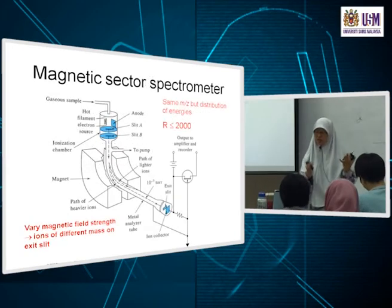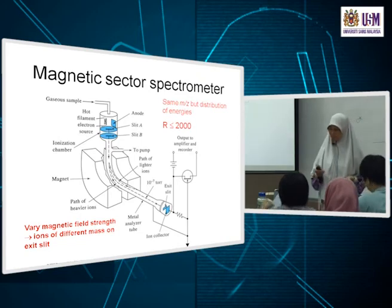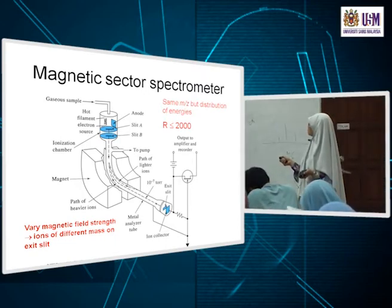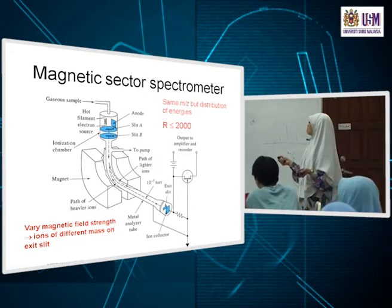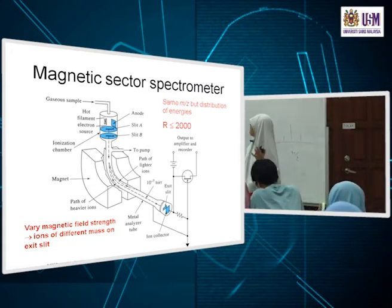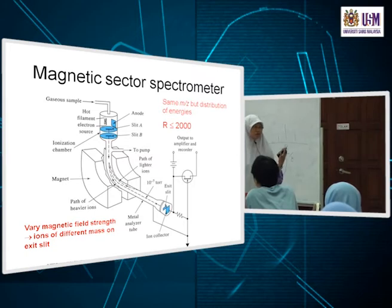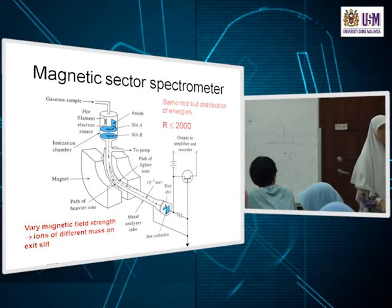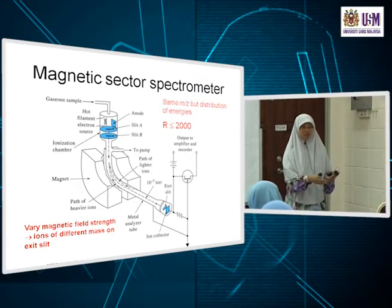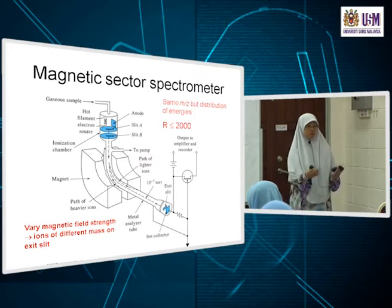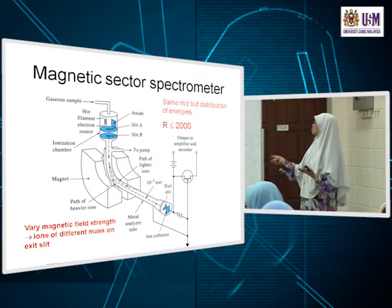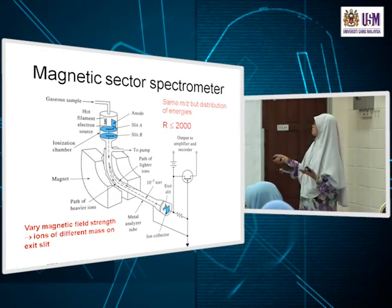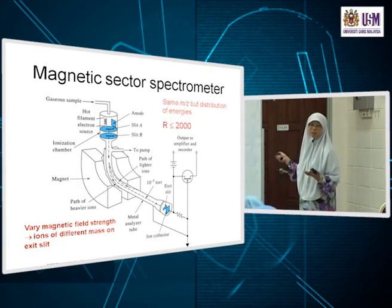Now we look at the first mass analyzer: the magnetic sector. Its resolution is approximately 2000. That's just to give an idea for comparison between different types of mass analyzers — it's not carved in stone; it may vary by instrument. From the name, a magnetic sector must have some magnet.